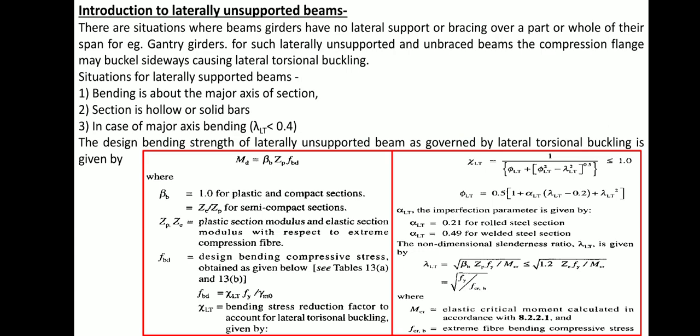You may calculate the fbd value directly using Table 13a or 13b along with fcrb from Table 14, or calculate it using the chi_lt, phi_lt, and lambda_lt factors. The critical moment Mcr accounts for the lateral torsional buckling constraint. Cases where lateral torsional buckling need not be considered include bending about the major axis, hollow or solid sections, and where the slenderness ratio lambda_lt is less than 0.4.